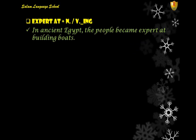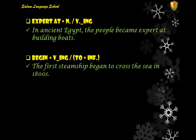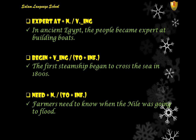'Expert' is followed by 'at' plus a noun or gerund. For example: 'In ancient Egypt, the people became expert at building boats' or 'expert at boats.' 'Being' plus gerund or plus 'to infinitive' — for example: 'The first steamship began to cross the sea in the 1800s.' 'Need' plus 'to infinitive' or plus a noun/gerund — for example: 'Farmers need to know when the Nile was going to flood', or 'My car is broken, it needs repairing.'